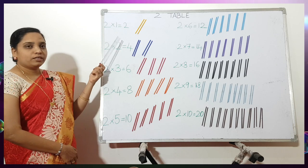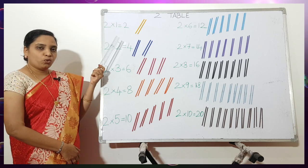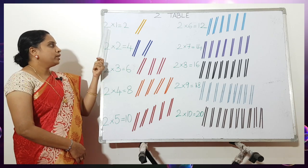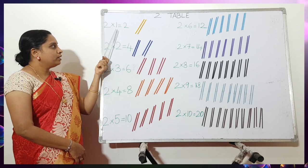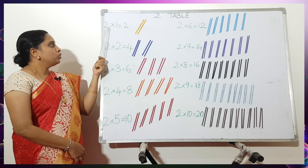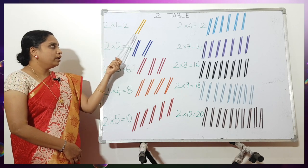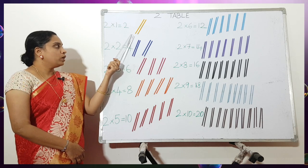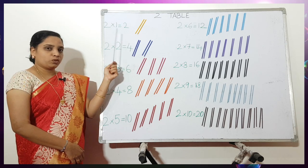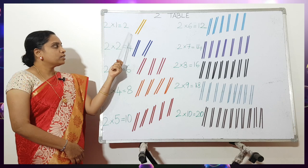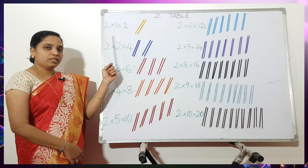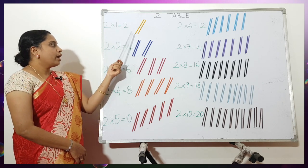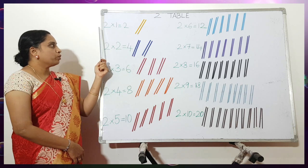So in table 2, one time 2 is 2. Here, a set of two lines is one group. So one time 2 is 2.